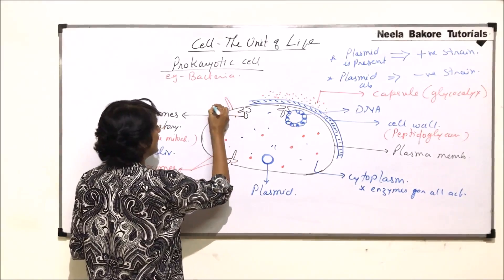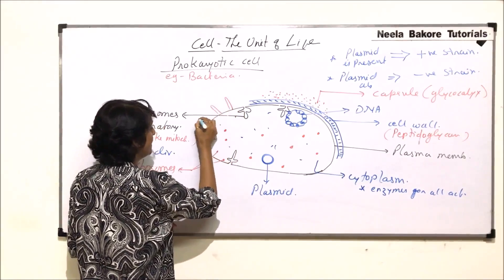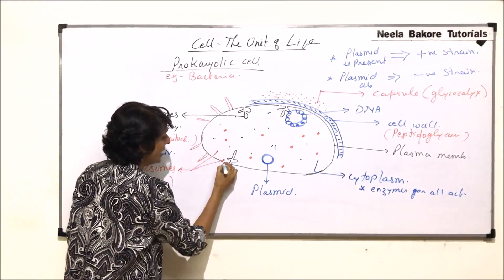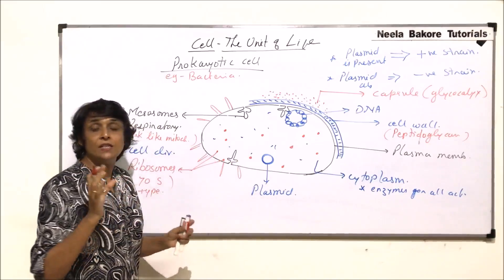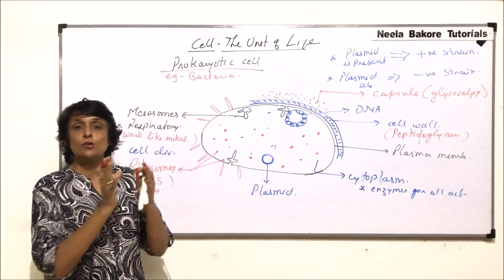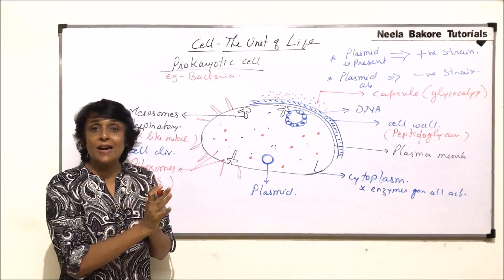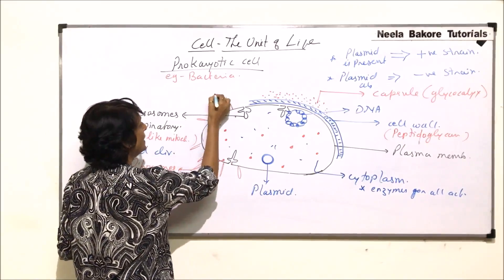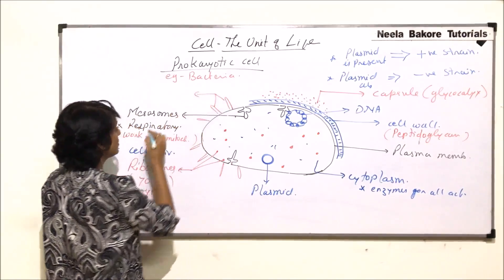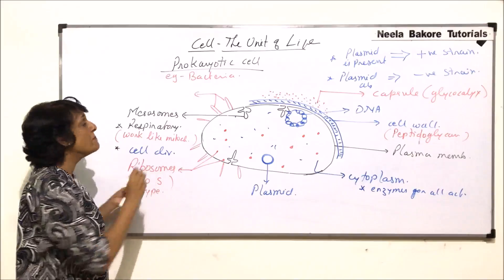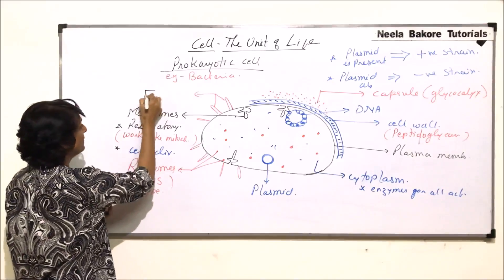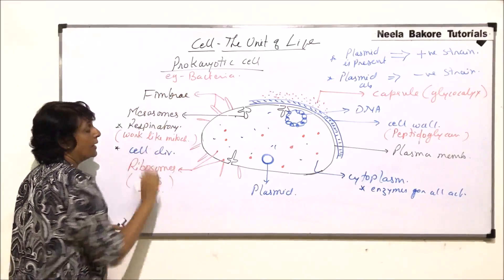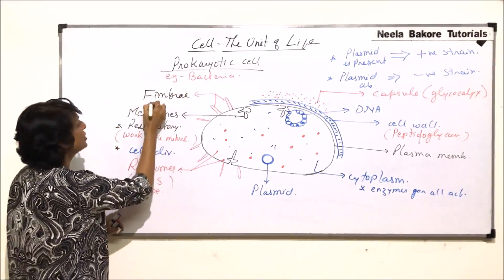Bacterial cells have finger-like projections. These finger-like projections help in adhesion — that means if the cell has to attach to some kind of substratum, these structures would help. These structures are known as fimbriae, and their role is adhesion, so they help the cell to stick to or attach to a substratum.